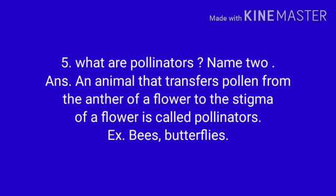Question No. 5: What are pollinators? Name 2. Answer: An animal that transfers pollen from the anthers of a flower to the stigma of a flower is called a pollinator. Examples: bees, butterflies.